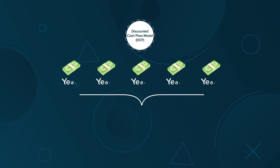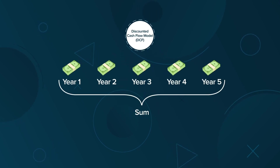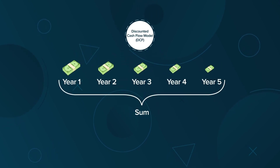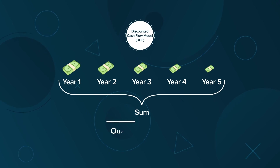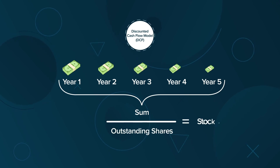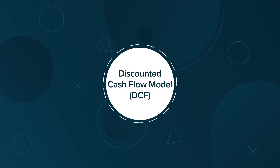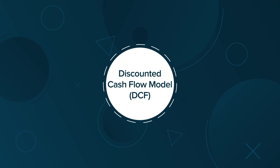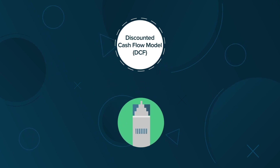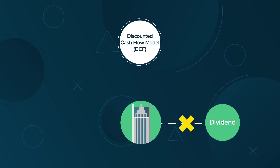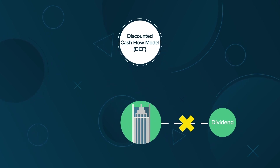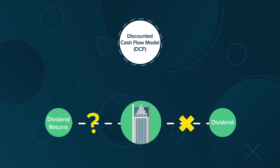The DCF model values a company based on its future cash flows discounted by the investor's expected rate of return, which is then used to calculate the stock price. The Discounted Cash Flow Model can be used even if a company doesn't pay a dividend or has unpredictable dividend returns.